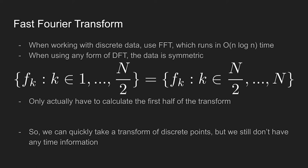And whenever we're using any form of a DFT, the data usually gives us some sort of symmetric values. So to even further optimize it, we only actually have to calculate the first half of the transformation since all of the data is going to be the exact same in the second half. So we can now quickly take the Fourier transform of a discrete set of points, but we have the problem of we still don't have any time information.